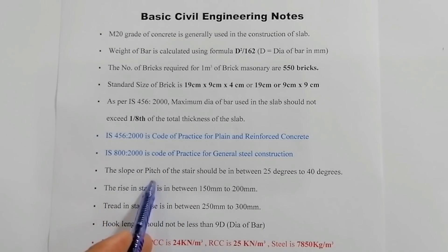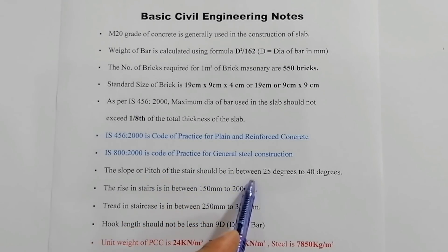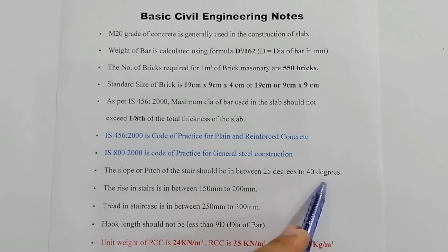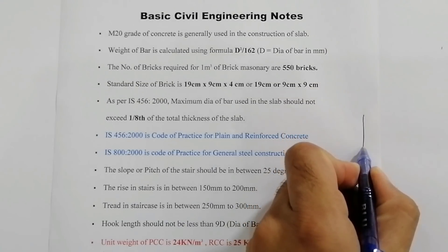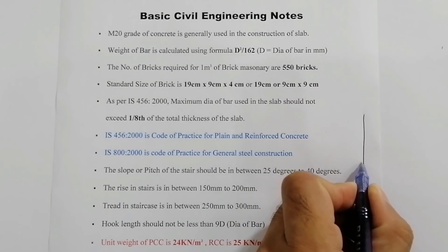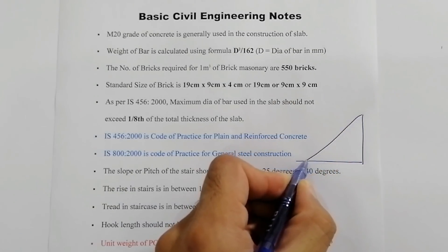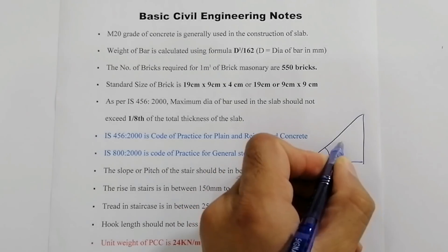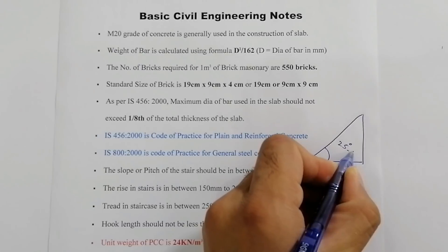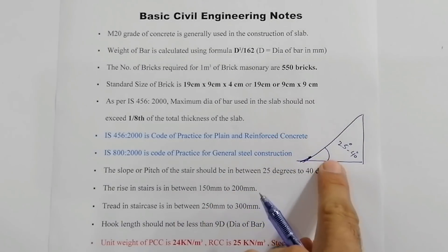The slope or pitch of the stairs should be in between 25 degrees to 40 degrees. For example, this is the height of flight and this is the run, so the angle of pitch should be between 25 degrees to 40 degrees. This is the suitable angle of the staircase.